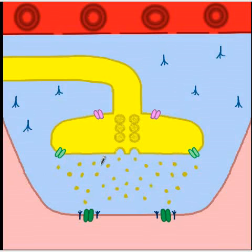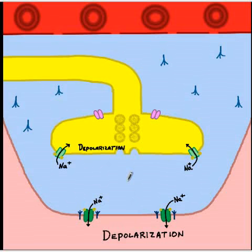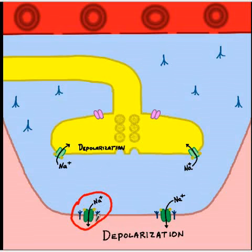These acetylcholine molecules will immediately begin to be biodegraded by plasma cholinesterase and true cholinesterase, but eventually they will reach their target and the motor end plate potential will occur. The nicotinic M receptor — the nicotinic muscle receptor — is opened through the binding of two acetylcholine molecules to the alpha subunits. That happens, sodium rushes in, depolarization occurs, and very quickly the acetylcholine is metabolized by the true cholinesterase near the nicotinic muscle receptor.